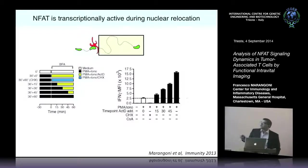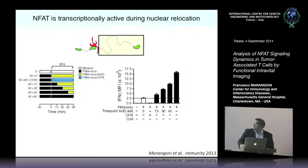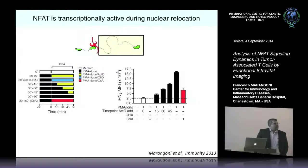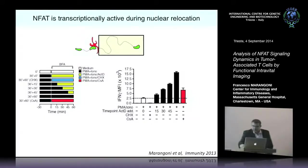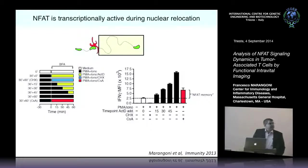We added actinomycin D at several time points along the measurement phase to create a sort of standard curve of transcription. The real experiment is to block NFAT completely through cyclosporine. To our surprise, we found that interferon gamma is transcribed above background — meaning we have a sort of NFAT memory, a functional ability of NFAT to transcribe genes during its deactivation.